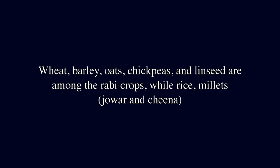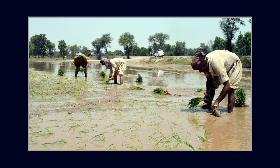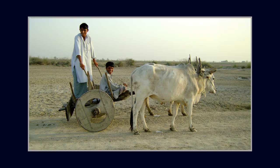Sites like Sibri and Pirak in the Kachi plains of northeastern Balochistan provide evidence of the cultivation of Rabi and Kharif crops. Wheat, barley, oats, chickpeas, and linseed are among the Rabi crops, while rice, millets, jowar, china millet, and grapes were the main Kharif crops. Domesticated animals included the humped bull, goats, and sheep. Very few villages made up the Jhukar culture, found at Mohenjo-daro, Chanhu-daro, Amri, and Jhukar, to the north of Mohenjo-daro, and it did not leave any traces of crop production.